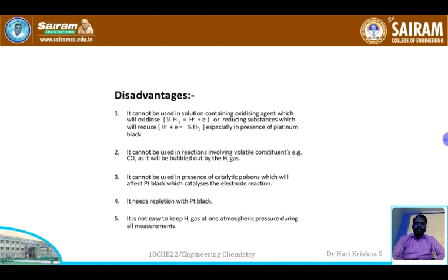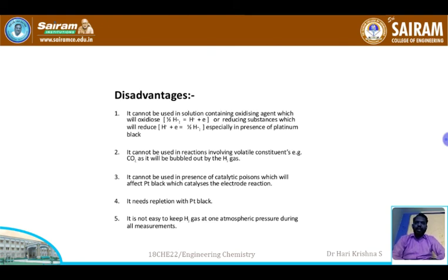The hydrogen electrode, by contrast, cannot be used in solutions containing oxidizing or reducing agents, cannot be used with volatile constituents, and cannot be used in the presence of catalytic poisons which affect platinum black that catalyses the electrode reaction. It also requires replenishment with platinum black and it is not easy to maintain hydrogen gas at one atmosphere pressure during all measurements.